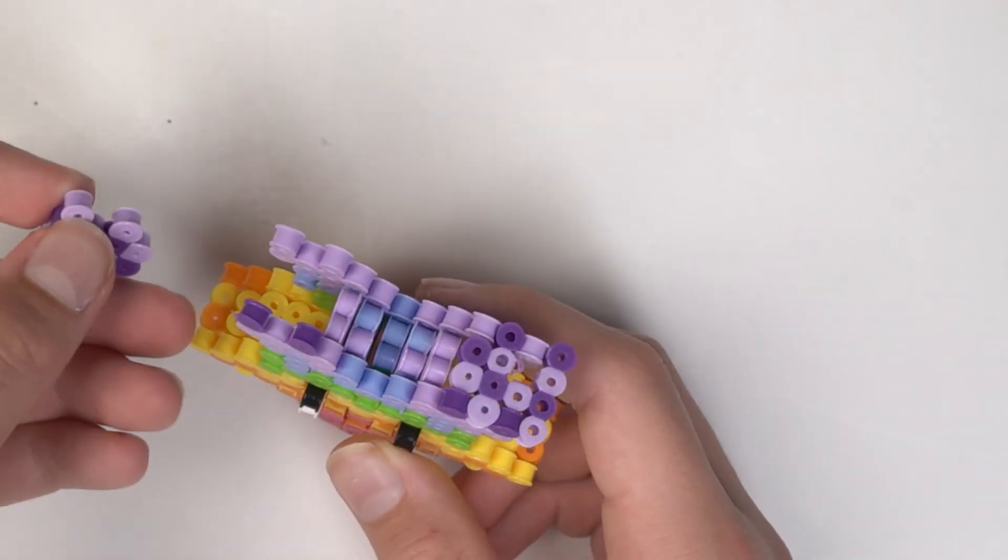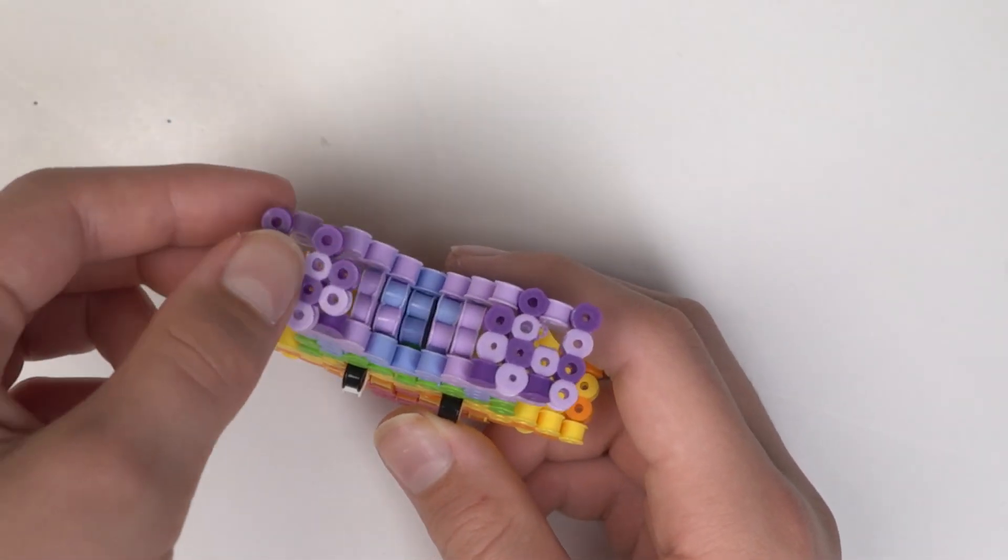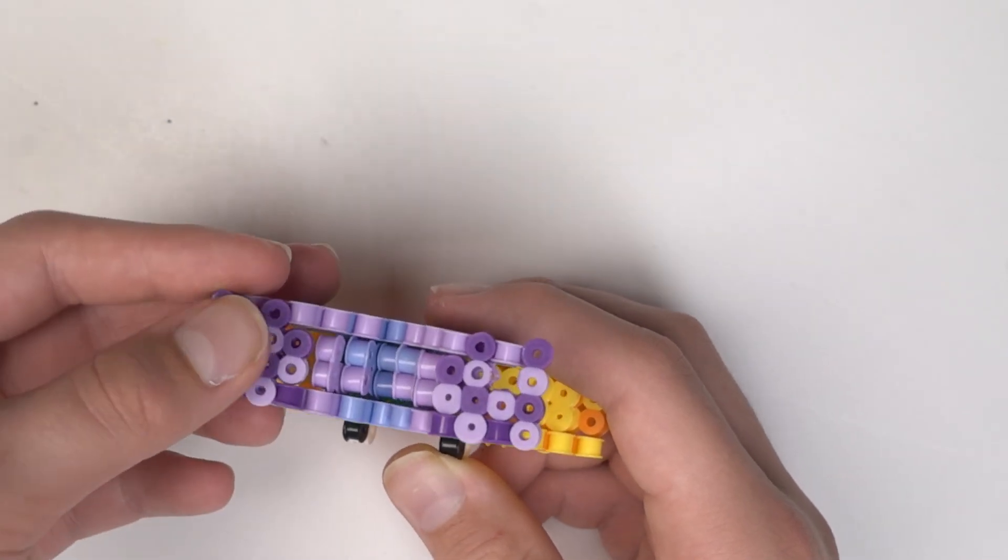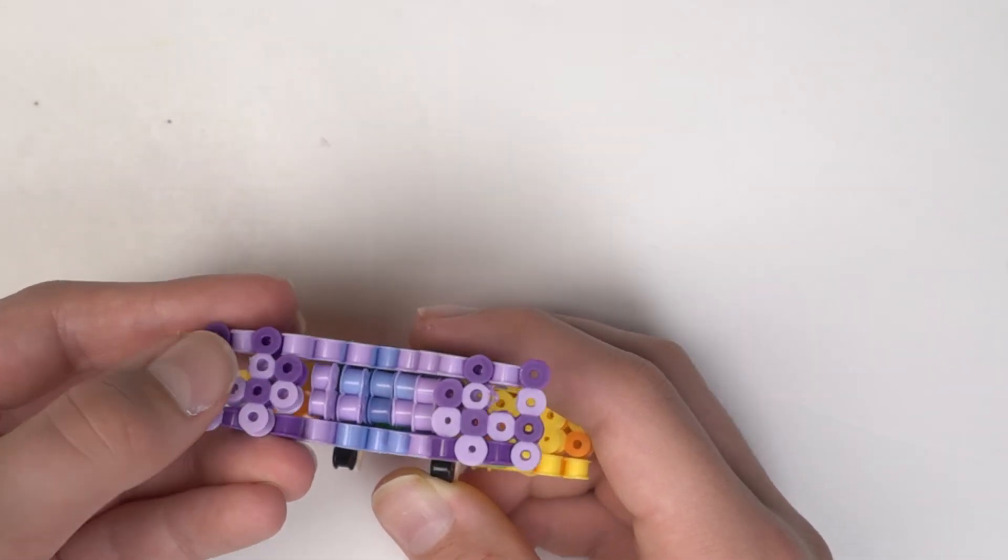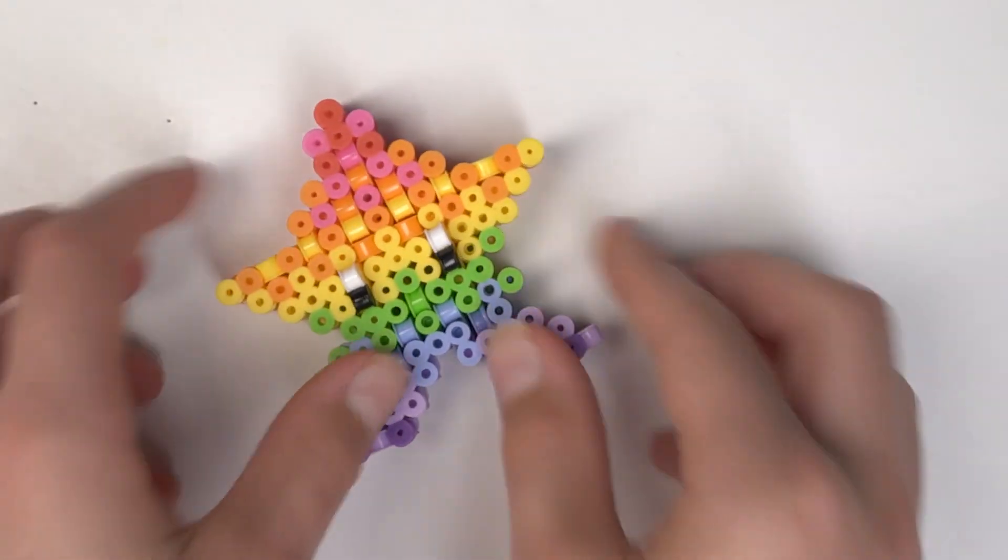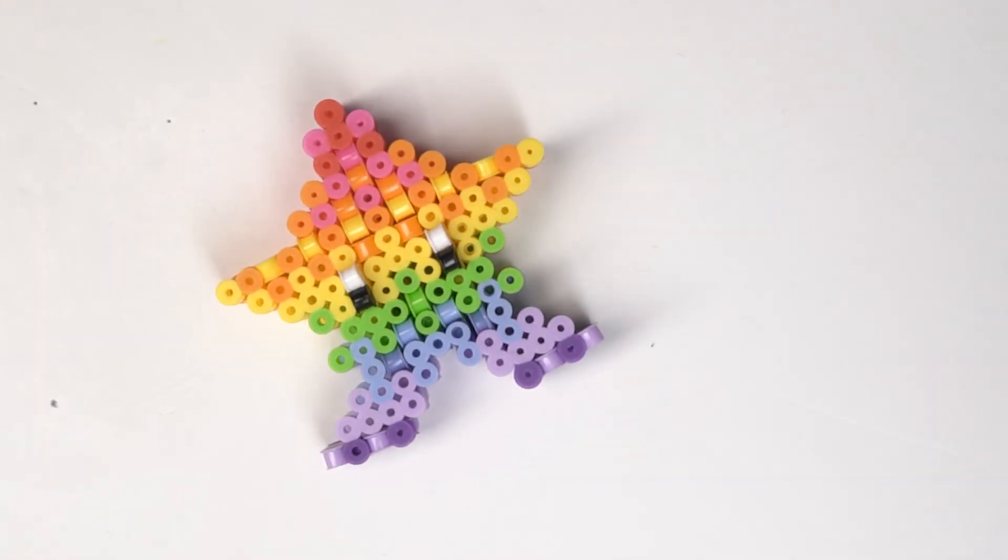Next we're going to take the similar piece and put it right next to it. And this is going to be how the assembly is looking so far and we're almost done.